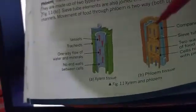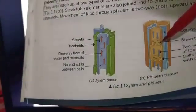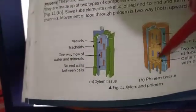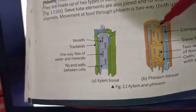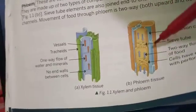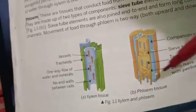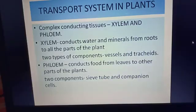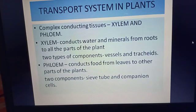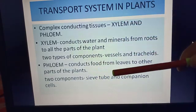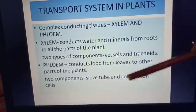The tube is called a sieve tube because there is a sieve-like formation at the center — we can call it a sieve plate. There are sieve plates along these tubes, which is why they are known as sieve tubes. The companion cells are present alongside this sieve tube, and together they form the phloem tissue. So we now know which tissues — xylem and phloem — help in the conduction of water, minerals, and food.